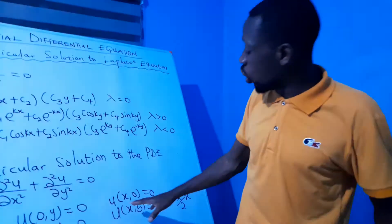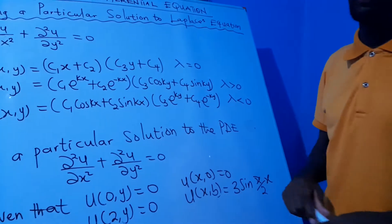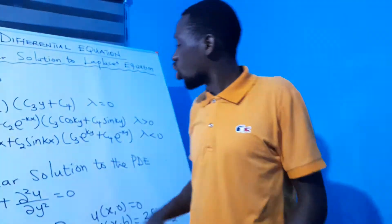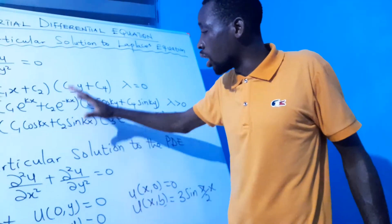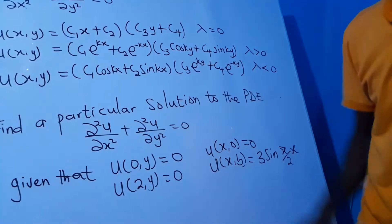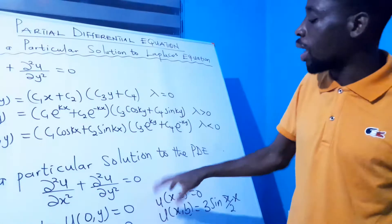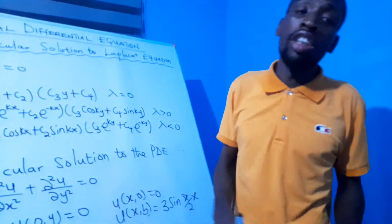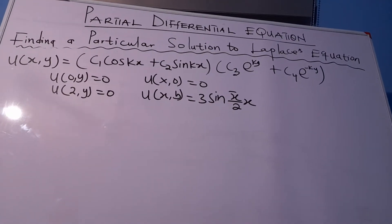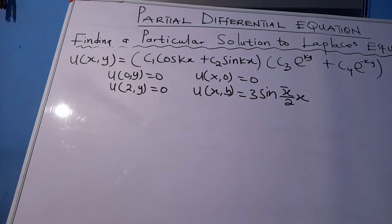When you look at the boundary conditions, you check the three general solutions and find out which one satisfies them. Among the three general solutions, the third one satisfies the given boundary conditions. So we'll take the third one and substitute the boundary conditions into it to find one particular solution. This will be a very interesting engagement, please take a seat.